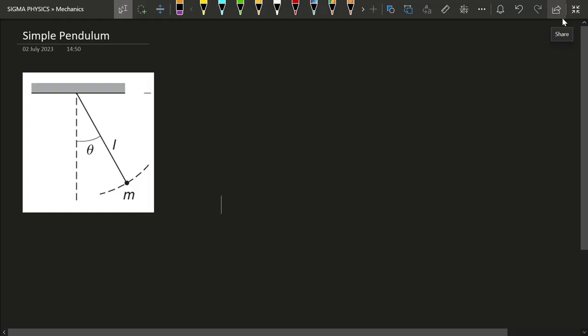Hello Sigmas! In my previous video we looked into the spring-mass system, which was an example of a harmonic oscillator, and its motion was really special—we called it simple harmonic motion.